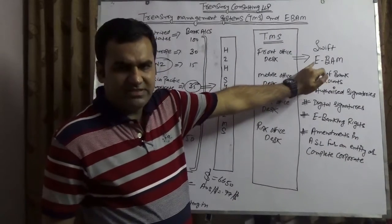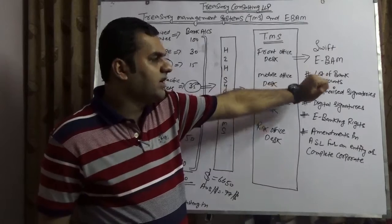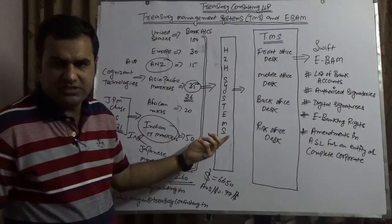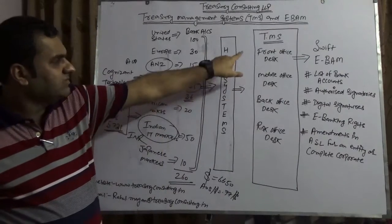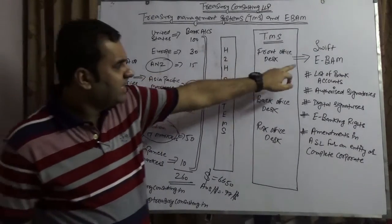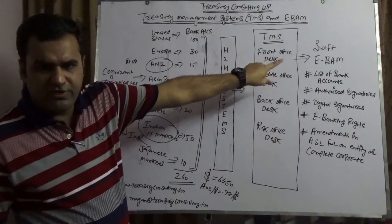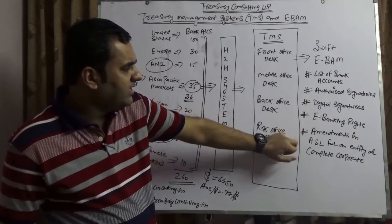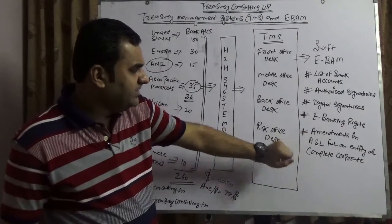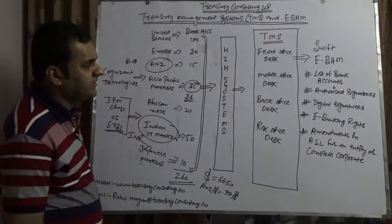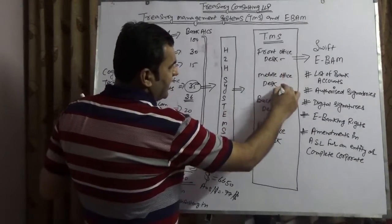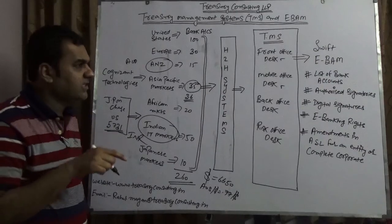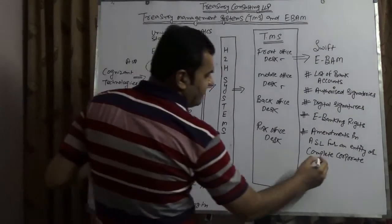You are linking that host to host with TMS. That TMS will further integrate with the technology which is by Swift, which is EBAM, Electronic Banking Account Management. What Cognizant could have done: even if they want host to host to be alive, they can continue to sync this with TMS and using this TMS they can continue to manage list of bank accounts, authorized signatory, digital signatures, e-banking rights, ASL which stands for Authorized Signatory List amendments.